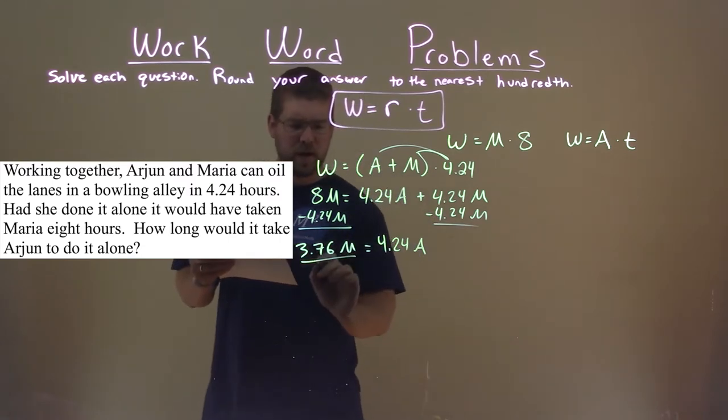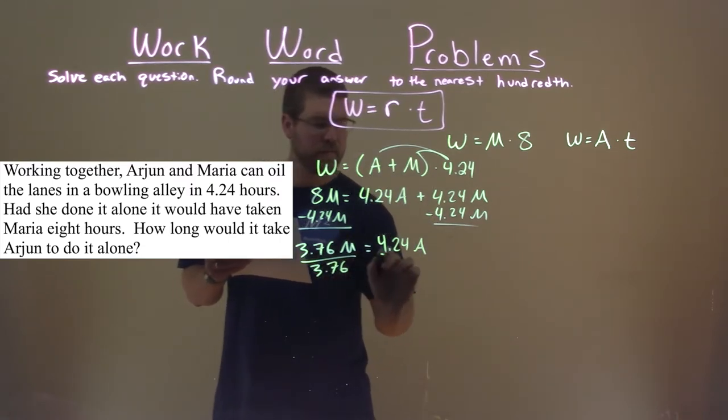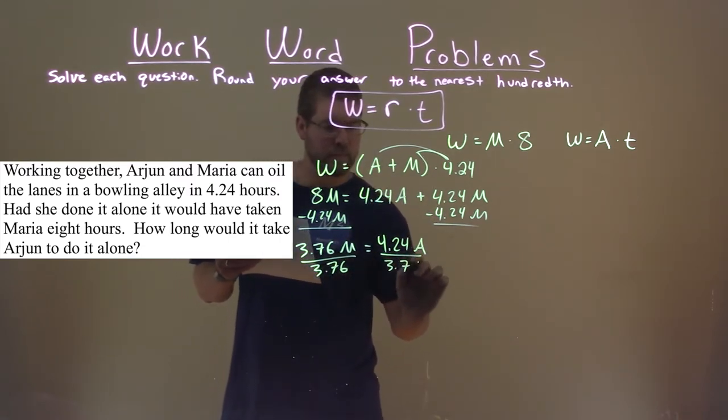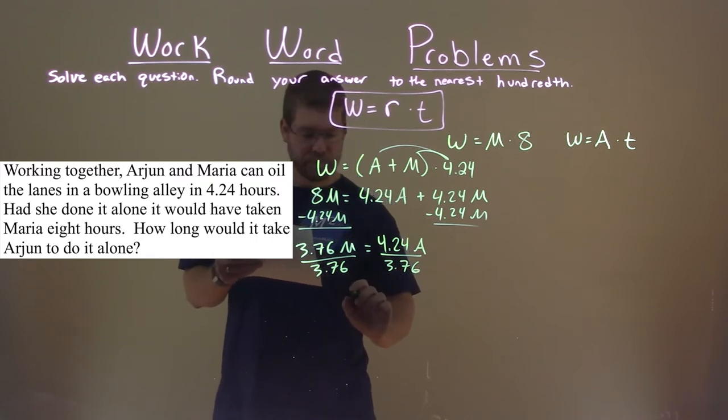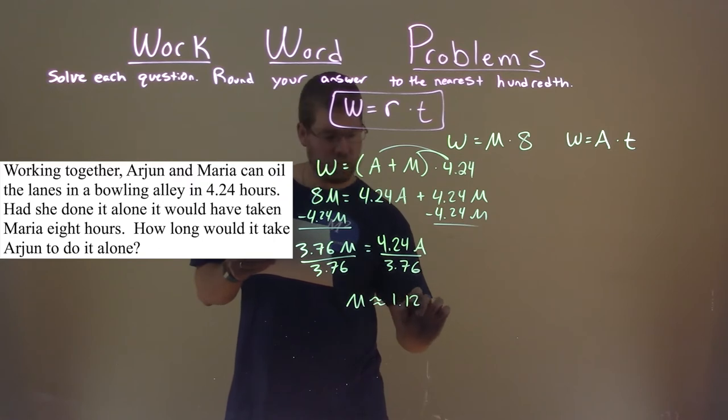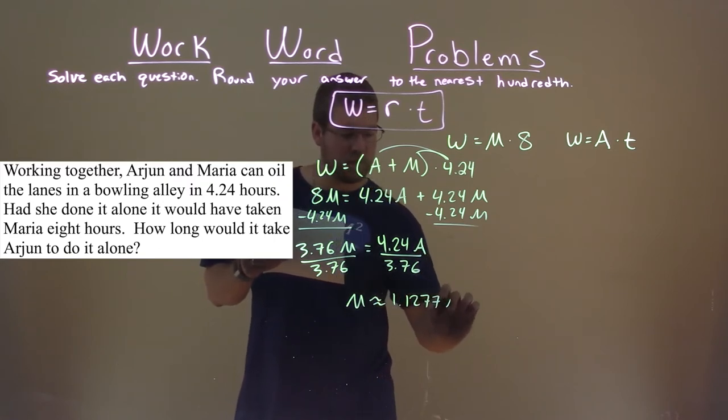Divide both sides by 3.76, and we get Maria's rate is approximately 1.1277 times Arjun's rate.